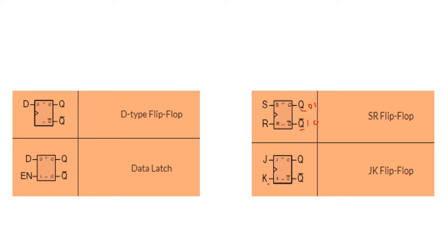Here we have the JK flip-flop, with two outputs. J and K are the inputs and Q is the output. This is an introduction to flip-flops: the D-type flip-flop, the data latch flip-flop with enable signal, the SR flip-flop, and the JK flip-flop.